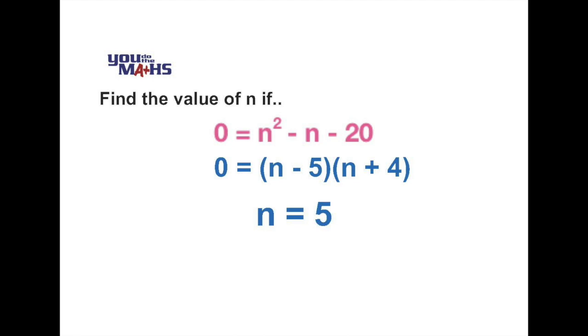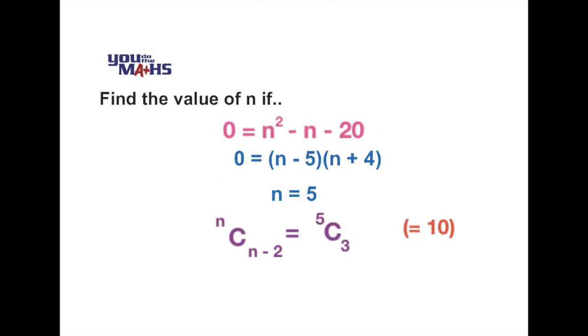Now this won't be a valid solution because in our combination notation we must have n and n minus 2 greater than or equal to 0. So placing the value of n equals 5 back into our original equation, we can see that n choose n minus 2 is actually equal to 5 choose 3, such that the result will be equal to 10.